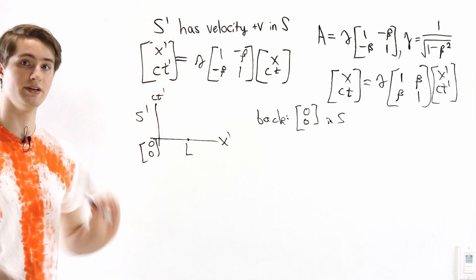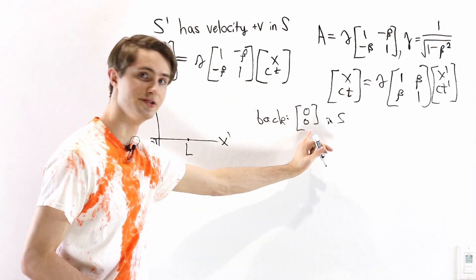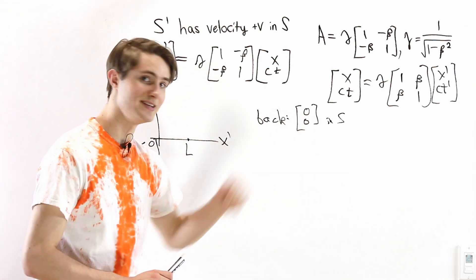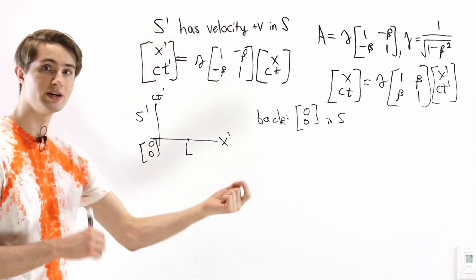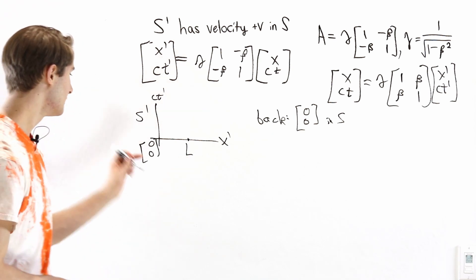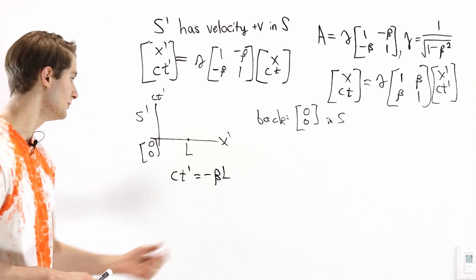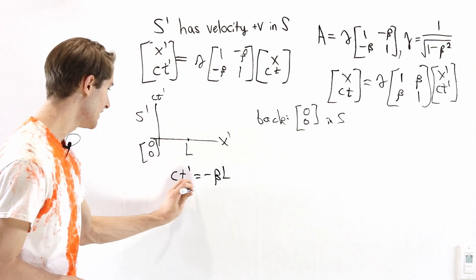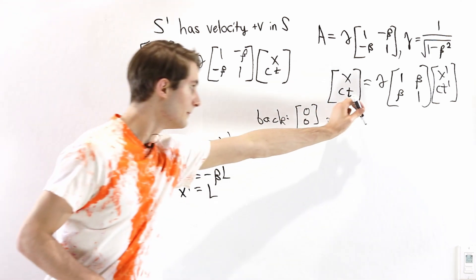We want to think about how the front end is observed in S. Remember, the back end has a time coordinate of 0, so whatever coordinate we choose in S', we need to choose one such that when we transform it, we get the same time. Any observer only sees one specific time slice, so the front and back must be observed at the same time for the length to make sense. I'm going to propose that we look at CT' equals negative beta L. Because the object is stationary, we can pick any time we want since the X value stays the same — it's not moving. So X' at the front end of the object is still L, regardless of time.